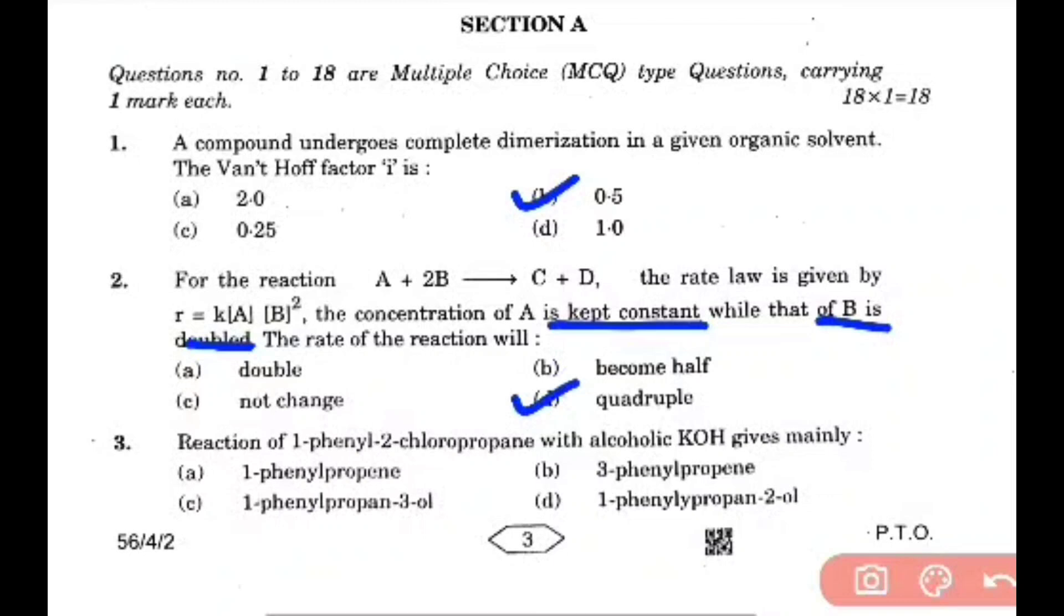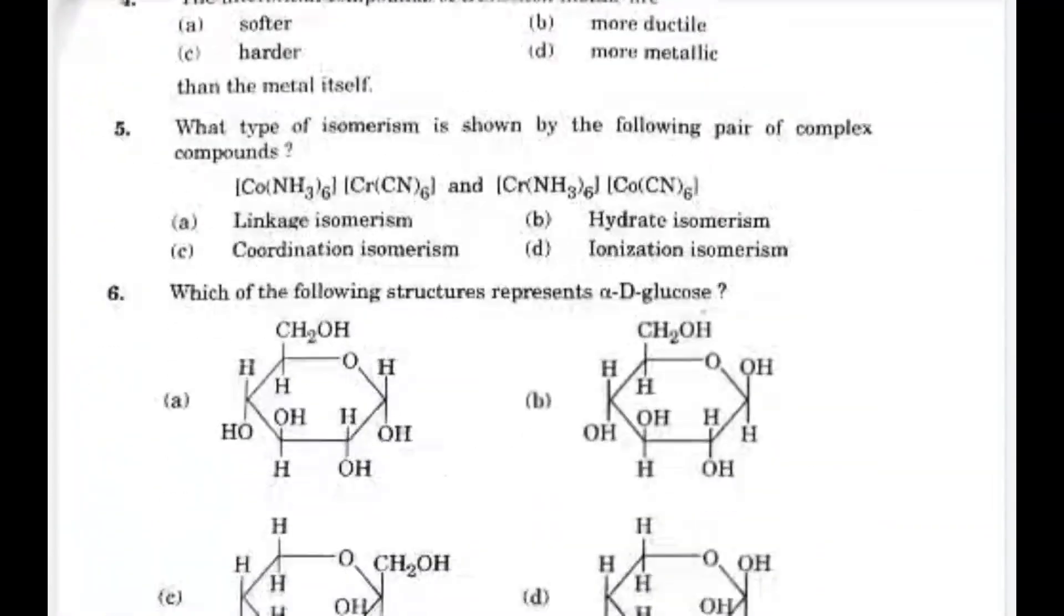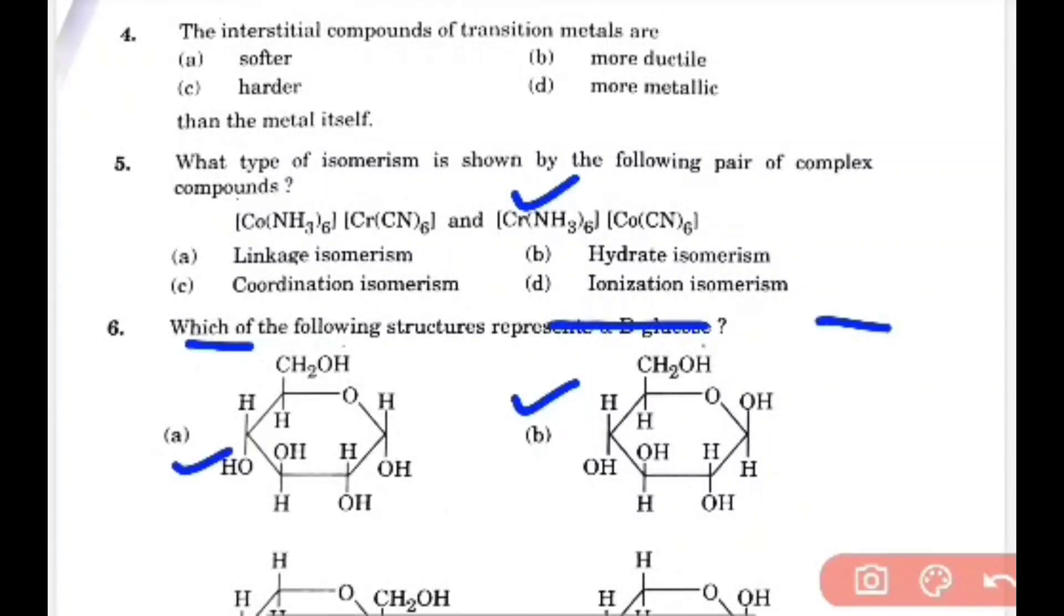Reaction of 1-phenyl-2-chloropropene with alcoholic KOH gives mainly 1-phenyl-propene. The interstitial compounds of transition metals are harder than the metal itself.